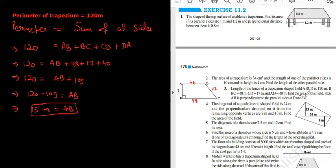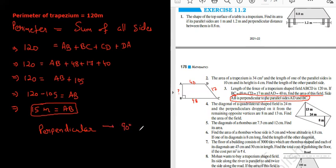Now find the area of the field, where side AB is perpendicular to the parallel sides. This information is important. AB is perpendicular — what do you mean by perpendicular? It is a straight line at 90 degrees. In any figure, if you draw a perpendicular, that is called the height. So AB is actually the height — they have given it in different words.